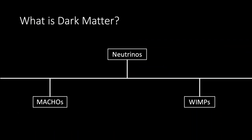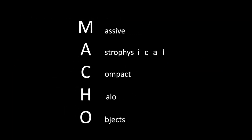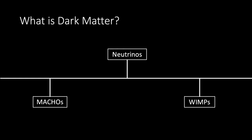One of the first candidates was MACHOs, massive astrophysical compact halo objects, which include neutron stars and white dwarfs. Although these objects are made from ordinary matter, they hardly emit any light. However, there aren't nearly enough MACHOs to account for all the dark matter in the universe.